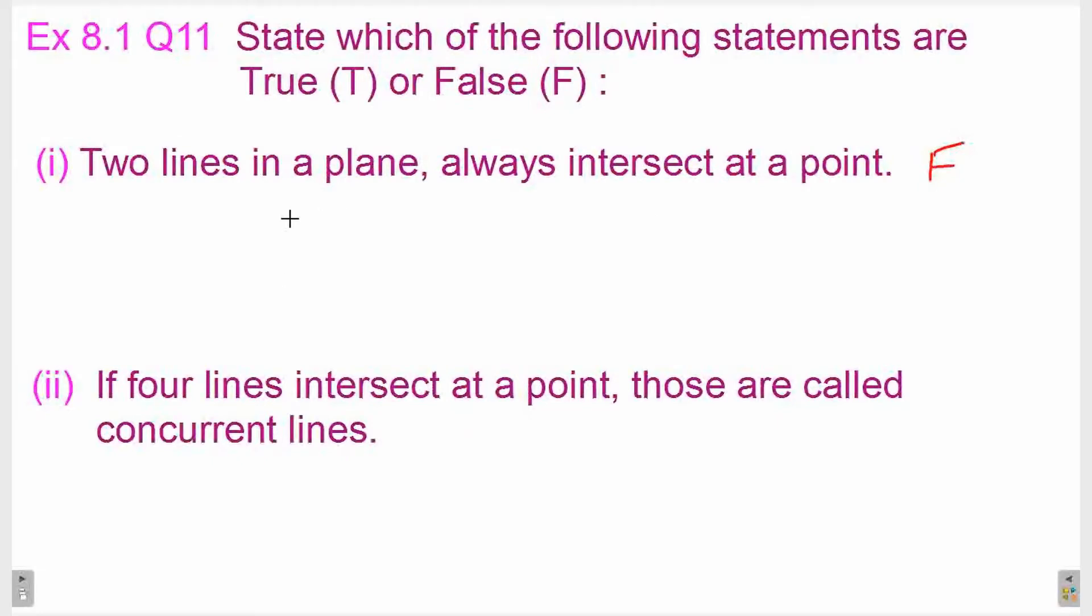Why? Because two lines in a plane, they may intersect each other or they may not intersect each other. If there are two lines in the plane, there are two cases. Either the lines will intersect each other, or they can be parallel to each other, meaning they will never intersect each other. So both cases are possible. Therefore, this statement is false.